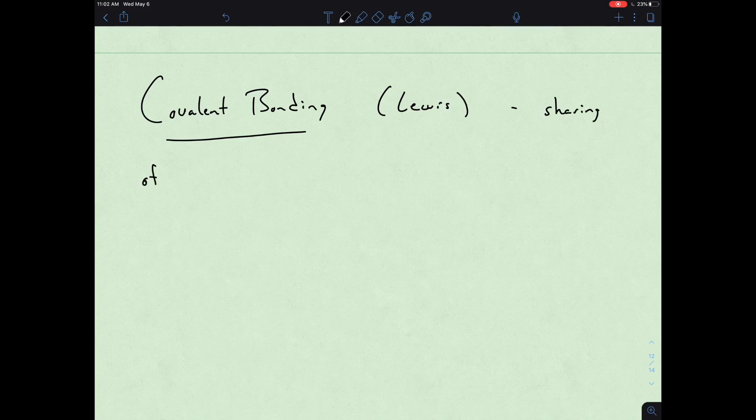Let's look at covalent bonding in terms of Lewis structures. Remember, we have a sharing of electrons, and that's basically since both elements are now non-metals.